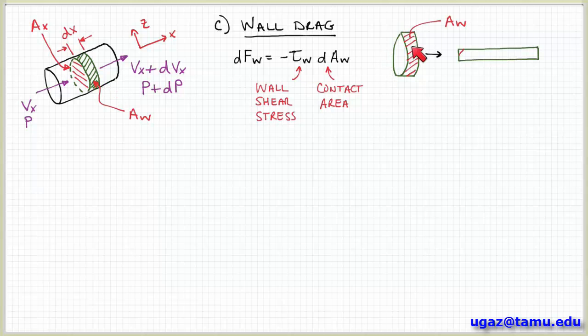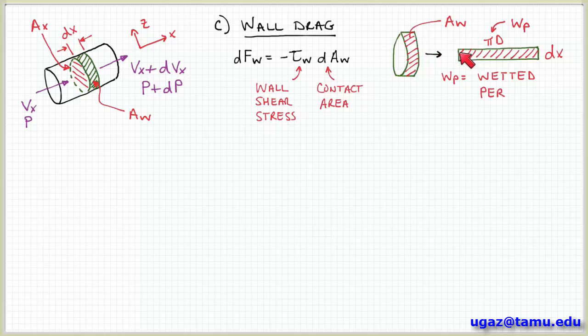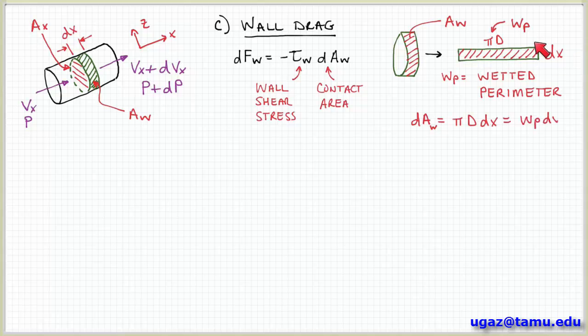So here, remember this hatched area represents the contact area where this disk of fluid is in contact with the pipe wall. And so if I cut this and stretch it out, this contact area was basically a rectangle with a width dx and a length equal to the perimeter, π times the diameter.